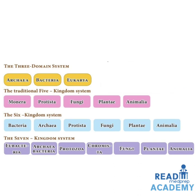Here you can see the different types of classifications summarized. The three domain system: Archaea, Bacteria, and Eukaryota. The five kingdom classification proposed by Whittaker: Monera, Protista, Fungi, Plantae, and Animalia. The six kingdom system: Bacteria, Archaea, Protista, Fungi, Plantae, and Animalia. The seven kingdom system: Eubacteria, Archaebacteria, Protozoa, Chromista, Fungi, Plantae, and Animalia.